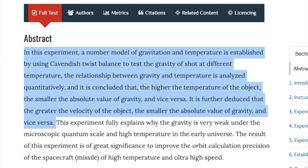Concluding that, in this experiment, a number model of gravitation and temperature is established by using Cavendish twist balance to test the gravity of shot at different temperatures. The relationship between gravity and temperature is analyzed quantitatively, and it is concluded that the higher the temperature of the object, the smaller the absolute value of gravity, and vice versa. It is further deduced that the greater the velocity of the object, the smaller the absolute value of gravity, and vice versa.